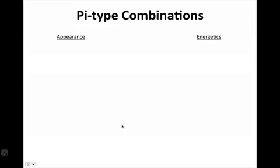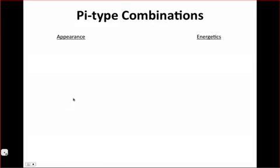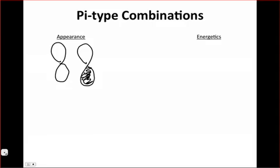All right, finally, there's a third kind of combination that looks quite a bit different from the sigma-type allowed combinations that we looked at on the slide before last. So imagine if we took two py orbitals, which are parallel to one another, and combine them.